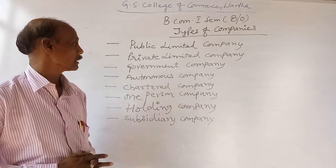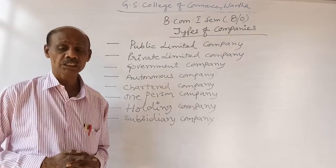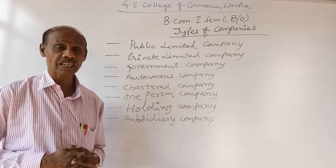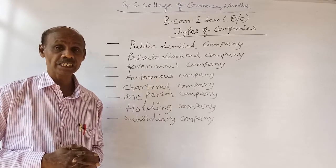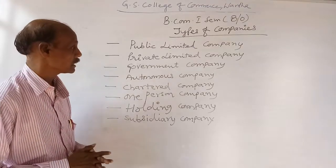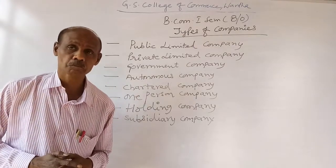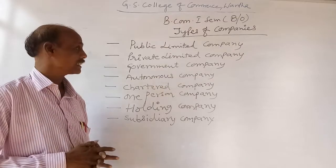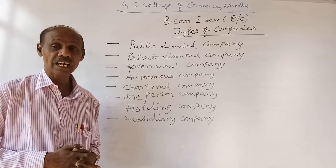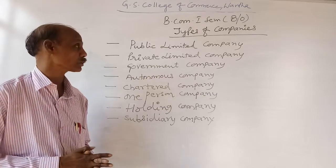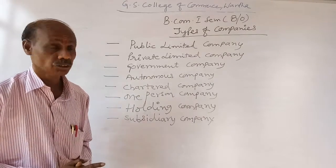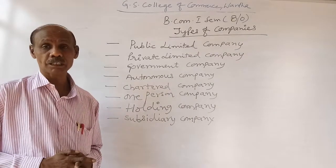Any private limited company should mention in its name 'Private Limited' or within brackets 'PVT' or 'P', indicating it is a private limited company. The private limited company does not have any access to the common public for subscription of shares — that is why it is called a private limited company.